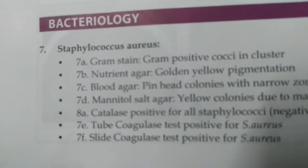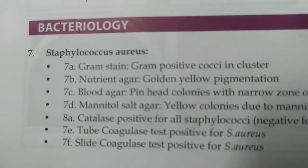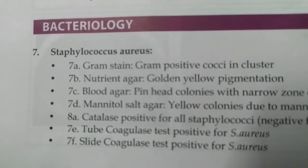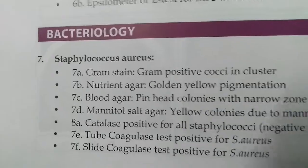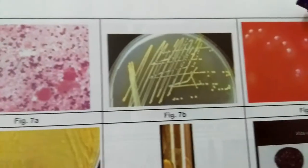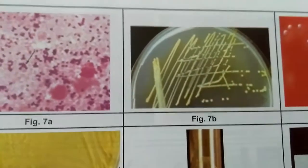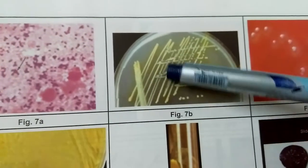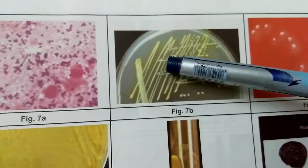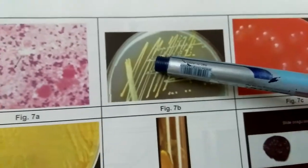The next image, 7b, is nutrient agar showing golden yellow pigmentation. As you know, 'aureus' means gold in Latin, so these are the characteristic yellow colonies of Staphylococcus aureus.